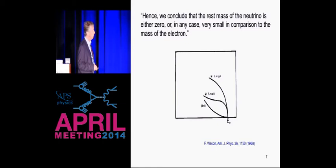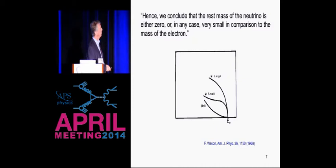One of the observations of this incredibly insightful paper was that he could tell that even from the limited data available, the mass of the neutrino must be rather small. Hence, he concluded: the rest mass of the neutrino is either zero or in any case very small in comparison to the mass of the electron. He shows three possibilities. It wasn't long before many theorists adopted Fermi's beautiful arguments.